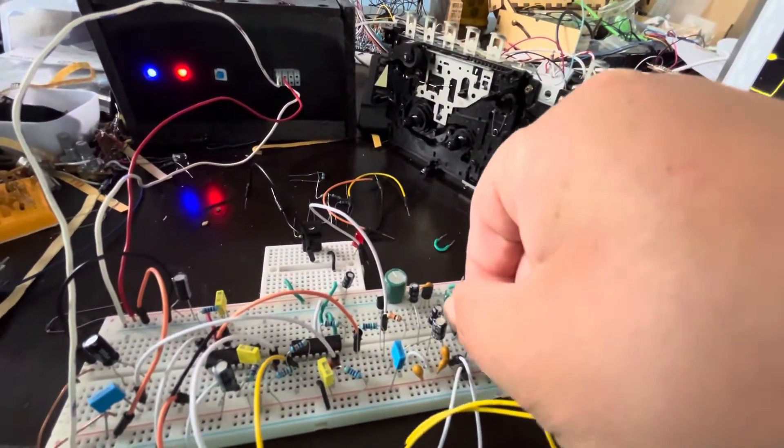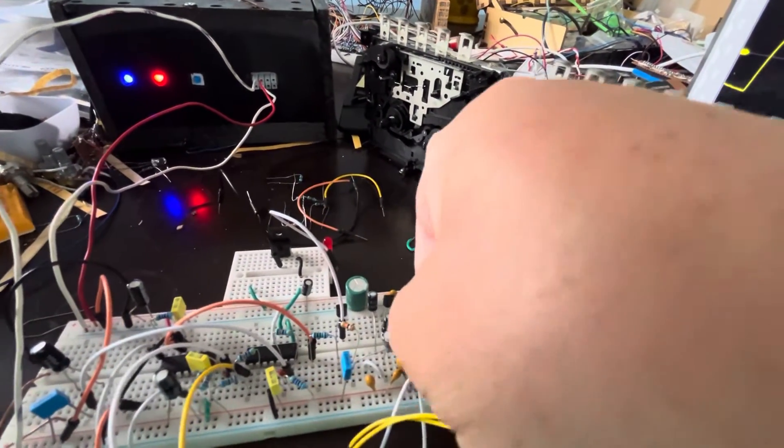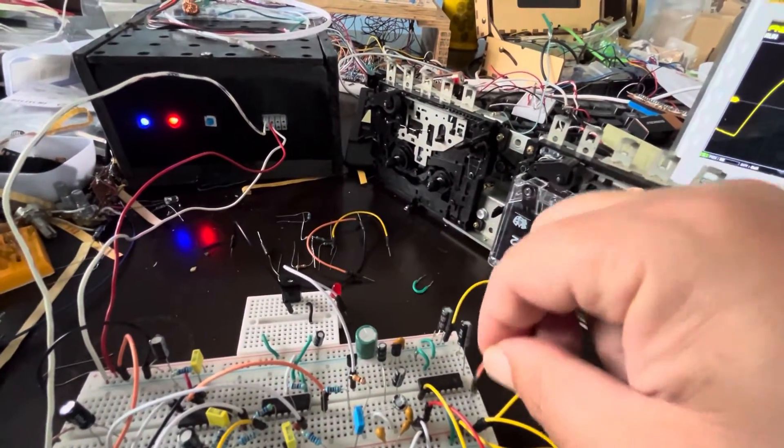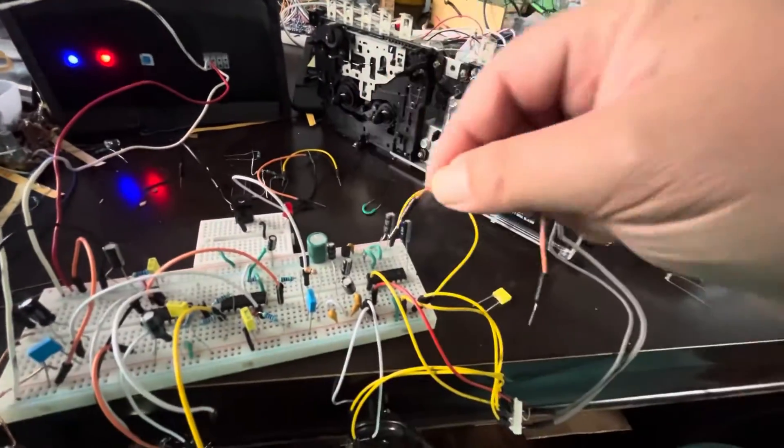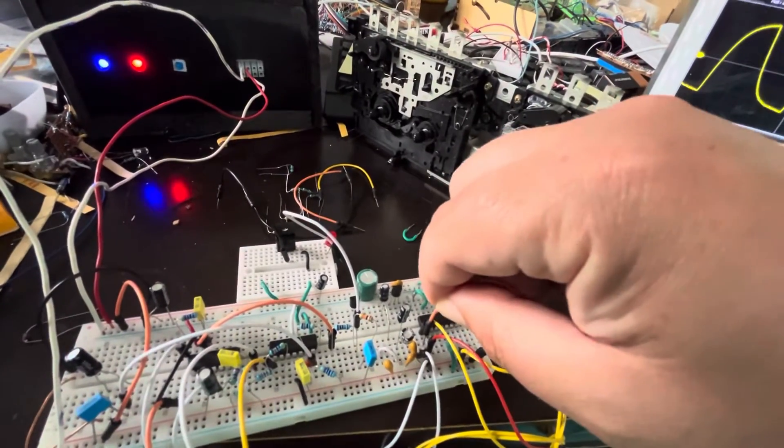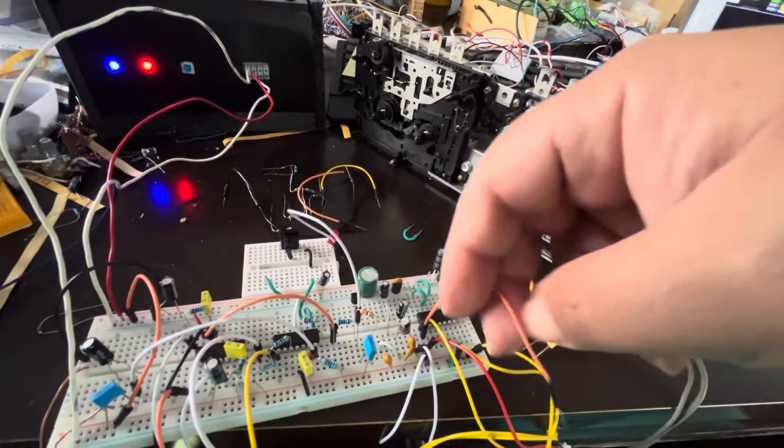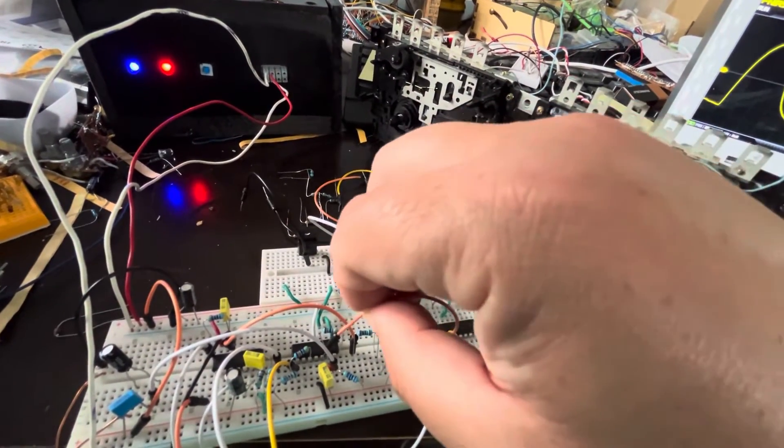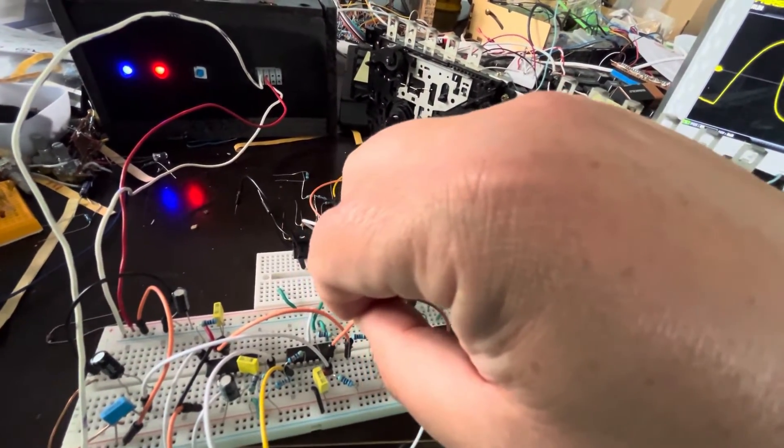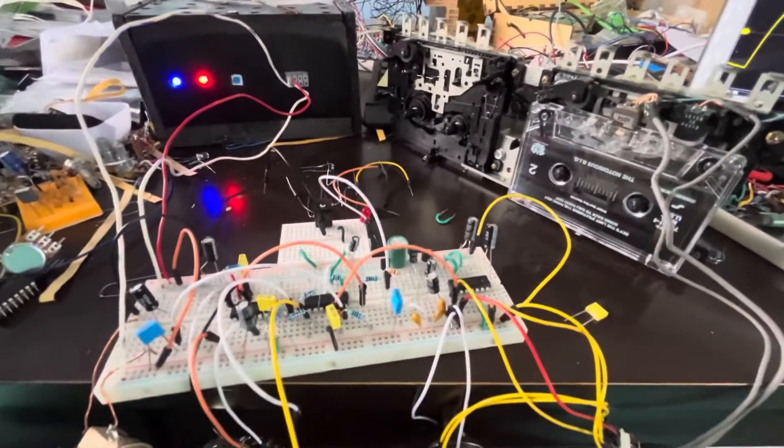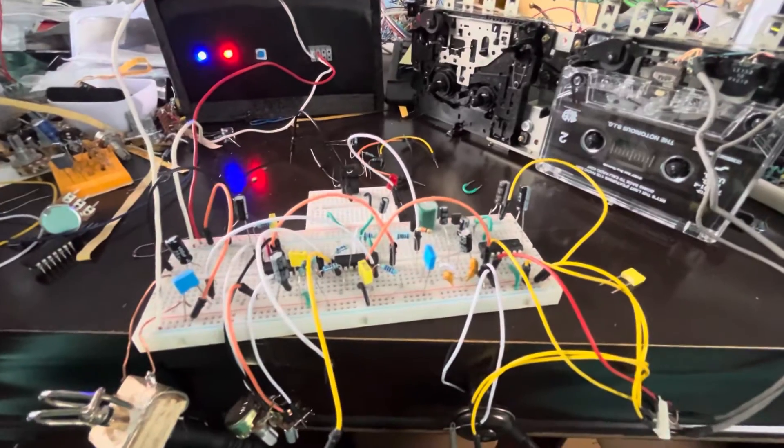Now, I'm going to hook it up to the tape head preamplifier circuit. And then I'm going to take this wire and I'm going to put it in here and put it in as the input and you can already hear it. You can hear the noise from it.